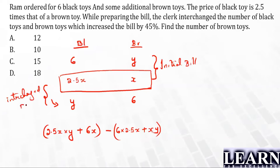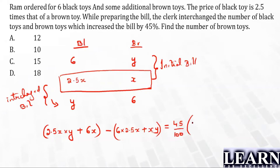When you subtract the initial bill from the interchanged bill, you get a 45% increase. So the interchanged bill minus the initial bill equals 45% of the previous amount, which is 45% of (6 × 2.5x + xy). When you interchange the values, you get something extra — that extra is 45% greater than the previous value.